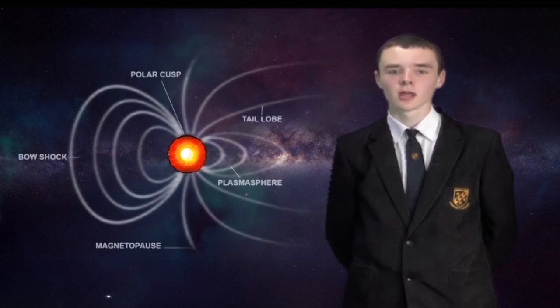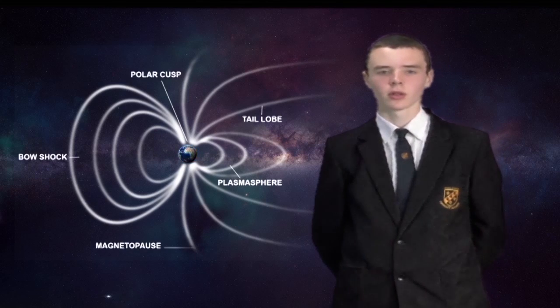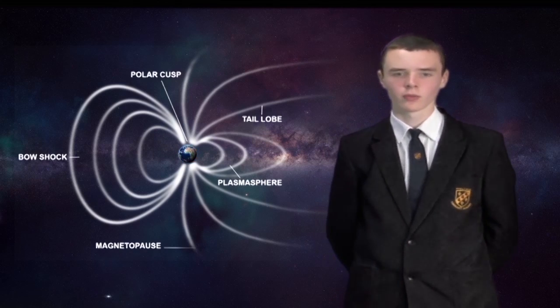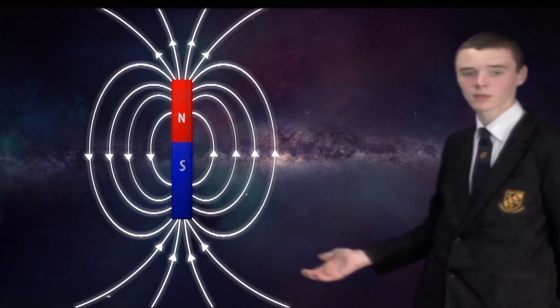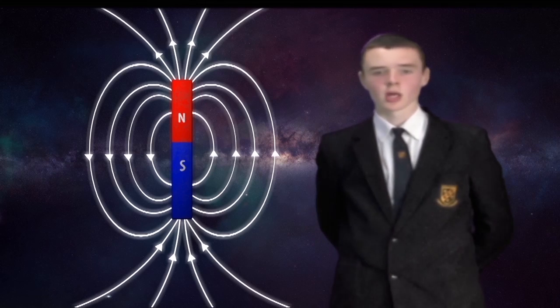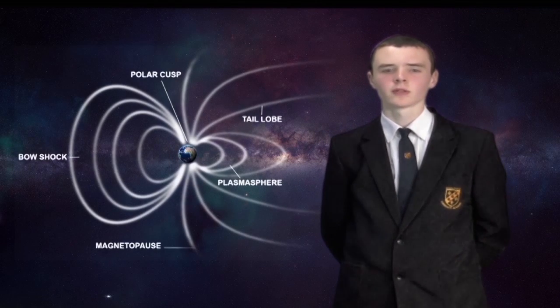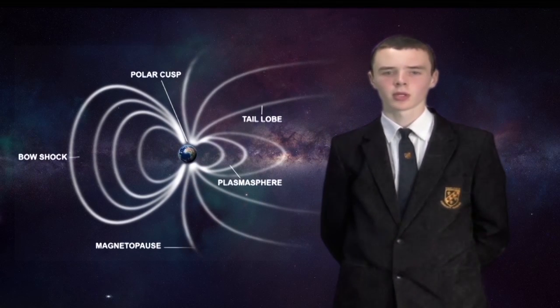At its center, the Earth contains a red hot solid iron and nickel core. This creates a magnetic field around the Earth, similar to the magnetic field of a bar magnet as shown here. Charged particles are attracted to the Earth's magnetic field, which exists because of our planet's iron core.